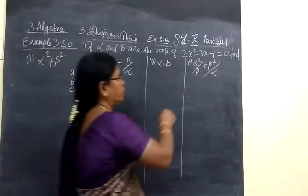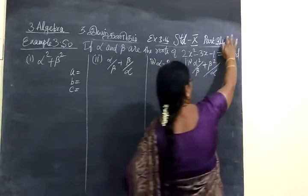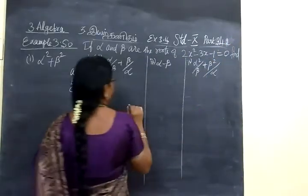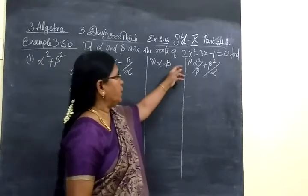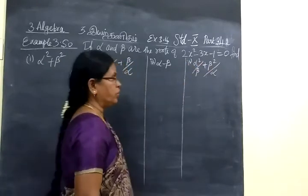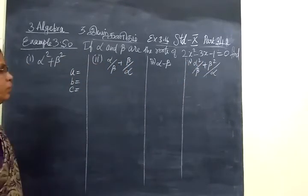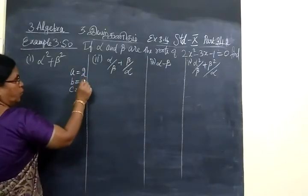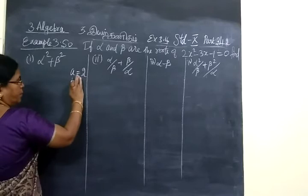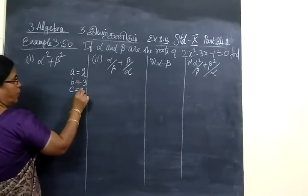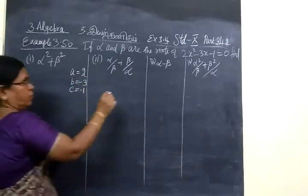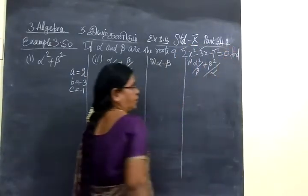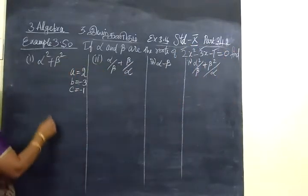Next, we do part 342. We have given the quadratic equation 2x squared minus 3x minus 1 equal to 0. We have to find all four values. The value of A equals 2, B equals minus 3, and C equals minus 1. These are the values of A, B, and C — note the minus signs.